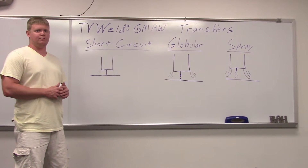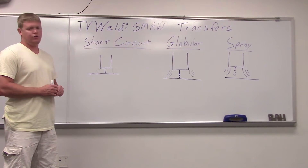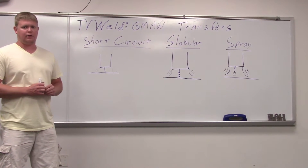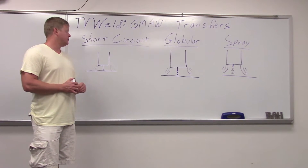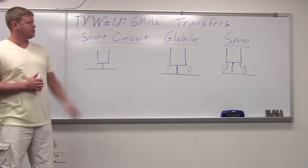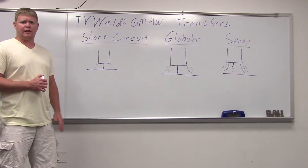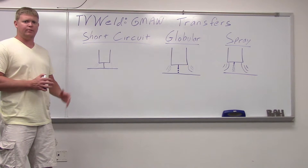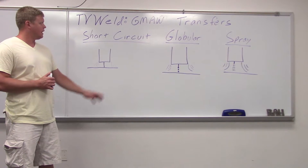What we're going over today is metal transfer systems that are used in gas metal arc welding, or MIG. There are three main ones: short circuit, globular, and spray. There are some other ones that are a little bit more rare, but these are the three main ones.